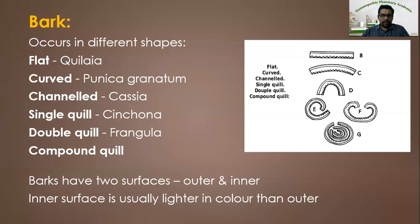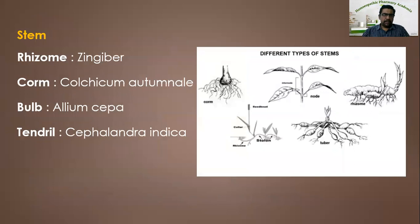Now let us see the stem. In Zingiber, the part used is the rhizome, whereas in Colchicum autumnale the part used is the corm. In Allium cepa the part used is the bulb, whereas in Cephalandra indica the part used is the tendril. These are the different and modified forms of stem.